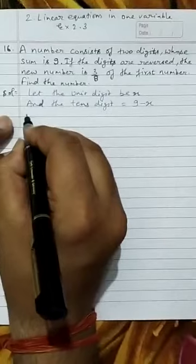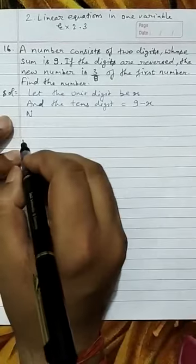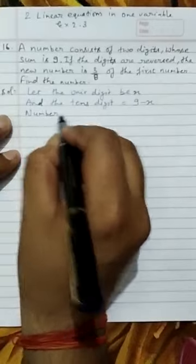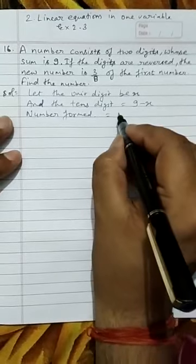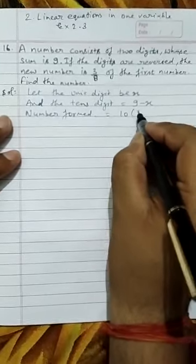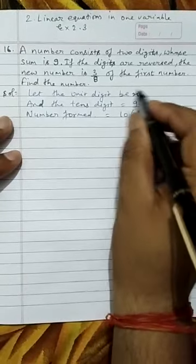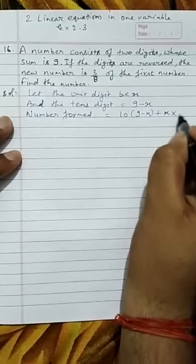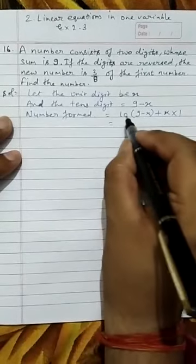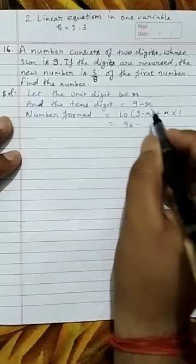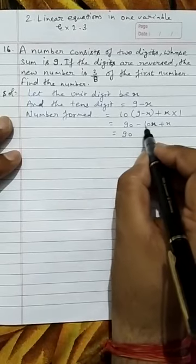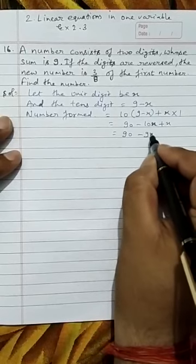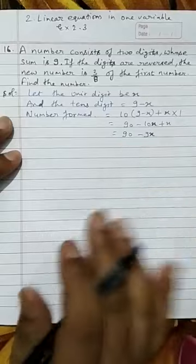The number is formed when the tens digit is multiplied by 10 and the units digit is multiplied by 1. So 10 times (9 minus x) plus x gives us 90 minus 10x plus x, which equals 90 minus 9x. This is our original number.